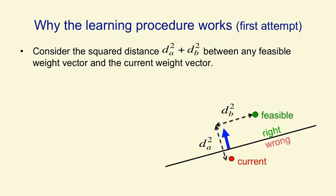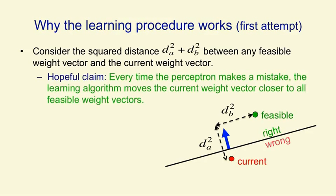We start with a weight vector that's getting some of the training cases wrong — in the diagram, we've shown a training case that it's getting wrong. The idea for the proof is that every time it gets a training case wrong, it will update the current weight vector in a way that makes it closer to every feasible weight vector. We can represent the squared distance of the current weight vector from a feasible weight vector as the sum of a squared distance along the line of the input vector and another squared distance orthogonal to that line. The orthogonal squared distance won't change, and the squared distance along the line of the input vector will get smaller. So our hopeful claim is that every time the perceptron makes a mistake, our current weight vector is going to get closer to all feasible weight vectors.